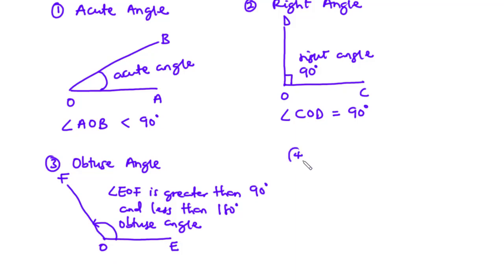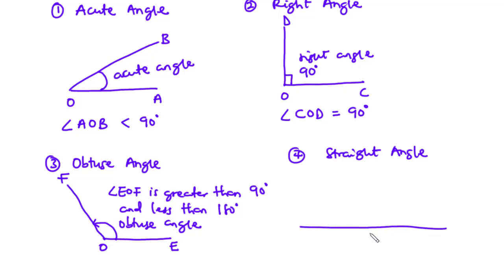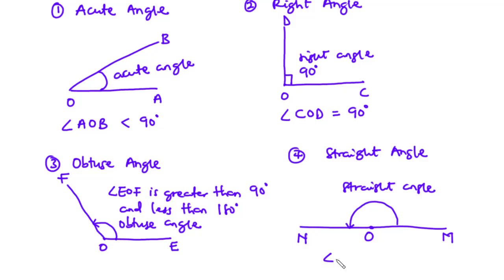The next angle is the straight angle. A straight angle is an angle whose measure or size is equal to 180 degrees. Basically, the angle formed on a straight line is equal to 180 degrees. So the angle MON is a straight angle and is equal to 180 degrees.